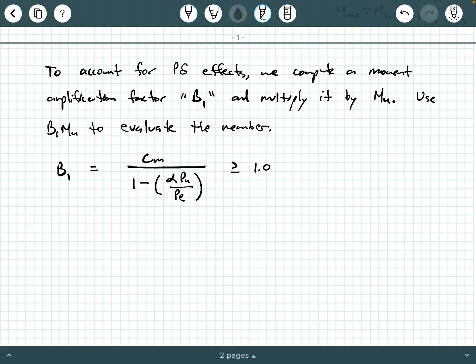So if you ever calculate a magnification factor that's less than one, obviously that doesn't make sense. You're not going to de-magnify your moment. So if you ever somehow calculate a B1 that's like less than one, you just take it as one. So it's always going to be bigger than or equal to one, never less than one. So let's kind of identify each of these terms.